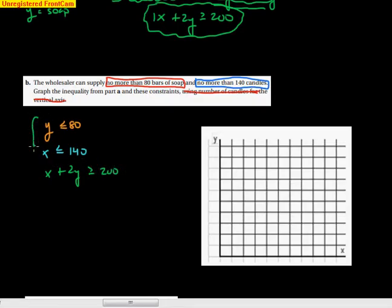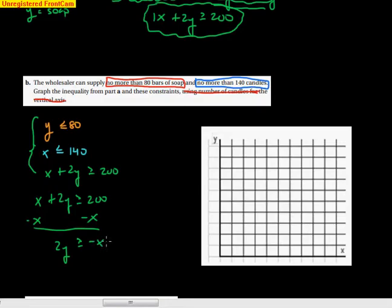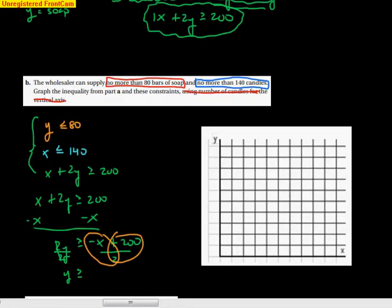To solve this I'm going to put the bottom inequality into slope-intercept form. Starting with x + 2y ≥ 200, I subtract x from both sides to get 2y ≥ −x + 200. Dividing both sides by positive 2 — and since it's positive, the inequality doesn't flip — gives y ≥ −½x + 100. Now I'm ready to graph.